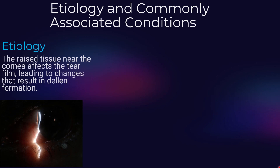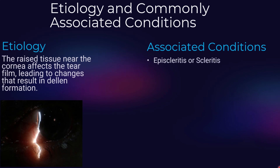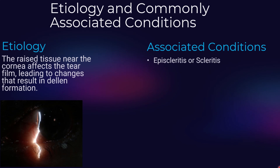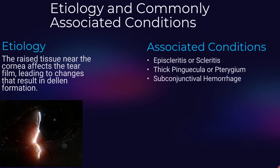Corneal dellen can occur due to various factors that lead to elevation of tissue near the cornea, such as episcleritis or scleritis. Episcleritis is the inflammation of the episclera and scleritis is the inflammation of the sclera. Pinguecula or pterygium — thick pinguecula or pterygium is the growth of tissue on the conjunctiva. Subconjunctival hemorrhage is the bleeding underneath the conjunctiva.